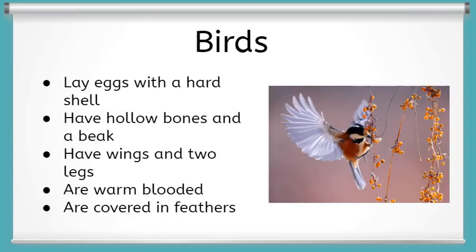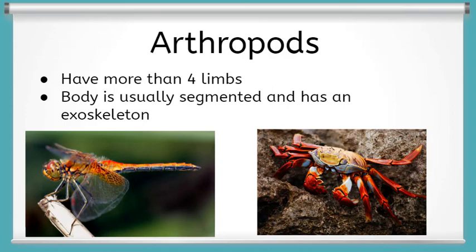Another animal class is birds. Birds lay eggs with a hollow shell and live on land. Birds are warm-blooded, have feathers as coverings, and have beaks. Birds have hollow bones, which help them to be more aerodynamic, and also have wings and two legs. Though all birds have wings, not all birds can fly — several types of birds, such as ostriches and penguins, don't have the ability to fly. In addition, flying is not unique to birds; other types of animals, such as some mammals and arthropods, can fly.